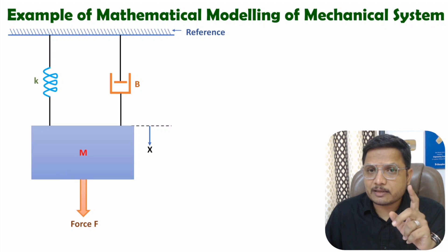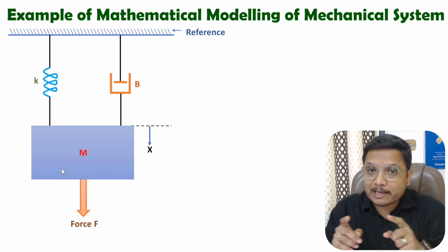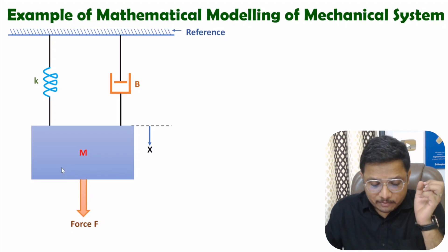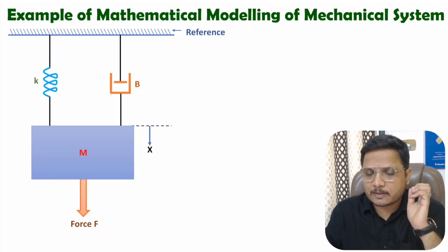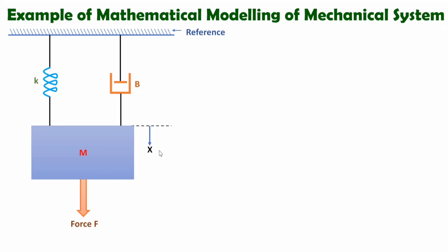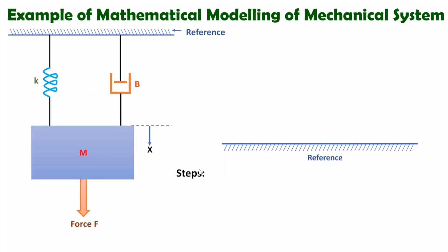To identify the differential equation, you first need to make an equivalent model of the given mechanical system. To make the equivalent model, follow some standard steps. First, plot a reference — this reference is the equivalent of the original reference. In the first step, identify nodes based on the number of displacements. Here we have only one displacement, that is x.